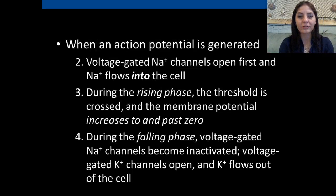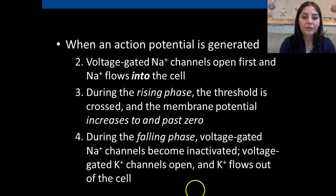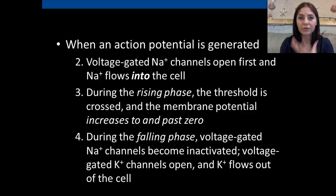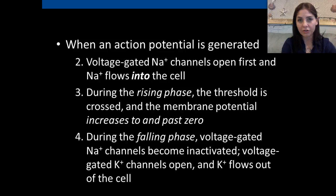When the action potential is generated, sodium channels open and we become more and more positive. During the falling phase, the voltage-gated sodium channels become inactivated and close down. The voltage-gated potassium channels then open up and potassium flows out of the cell, creating a negative charge. Sodium shuts down, potassium flows out, and we start returning to the resting state. However, we actually get an undershoot — because there's such a lack of potassium and sodium inside, the cell becomes more negative than negative 70 millivolts.